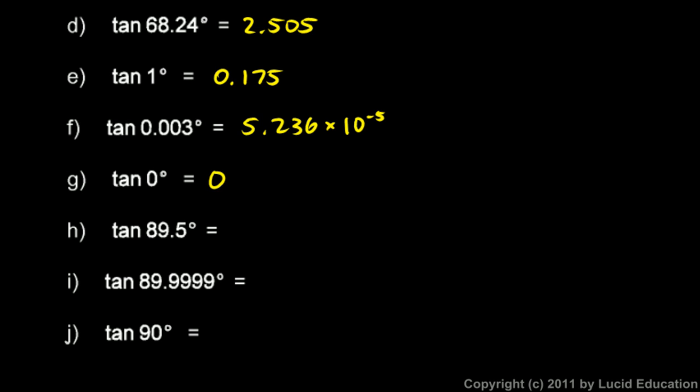So let's fill in our notes. Tangent of 89.5 was 114.6. Tangent of 89.9999 came out to 572,957. And you don't have to know these numbers. Whenever you need a number like this, you just put it into the calculator. Don't try to memorize these.